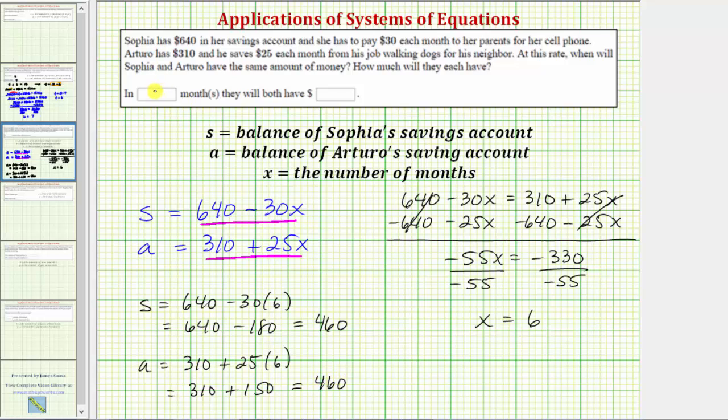So now we know that in six months they will both have 460 dollars. I hope you found this helpful.